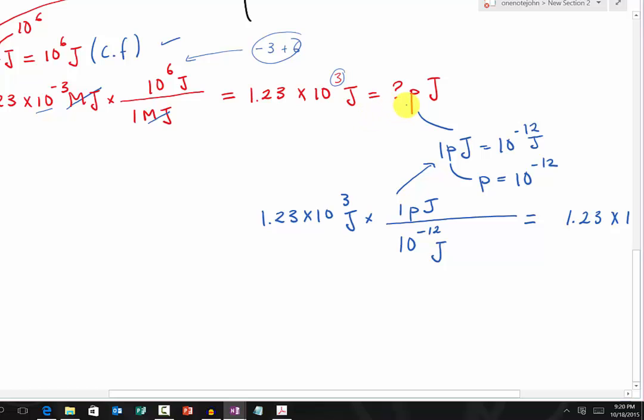The next thing we have to do is convert this into picajoule. Again, picajoule can be interpreted as a conversion factor, because the prefix pico, or p, equals 10 to the negative 12. Then we apply the conversion factor.